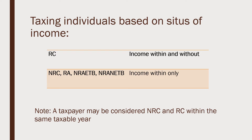For taxing individuals based on situs of income: resident citizens are taxed on income within and without, but all other individual taxpayers are taxed for income within only. Note that a taxpayer may be considered a non-resident citizen and a resident citizen within the same taxable year. For example, if an OFW comes back mid-year permanently, for the first six months he is a non-resident citizen taxed only on income within, and for the last six months he is a resident citizen taxed on income within and without.